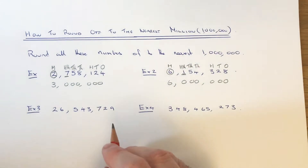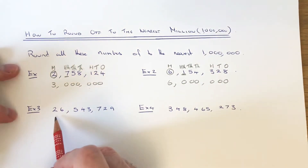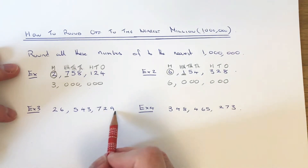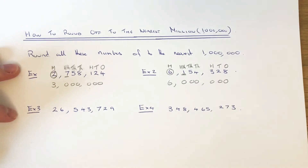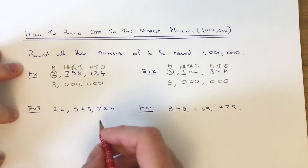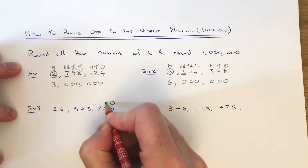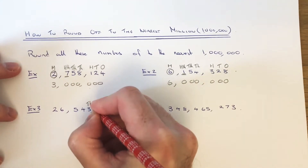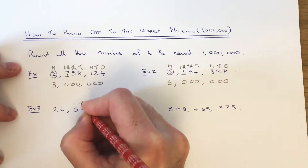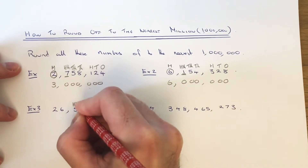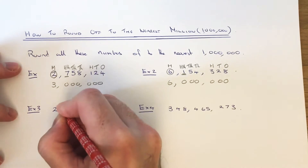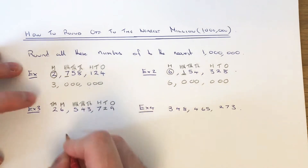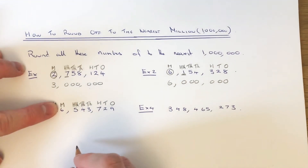Let's move on to example 3. This time we've got 26,543,729. We need to identify the millions column. At the end we've got the ones, then the tens, then the hundreds, then thousands, then tens of thousands, then hundreds of thousands, then millions, and then tens of millions. We're not really interested in those, so we can cover them up for the time being.